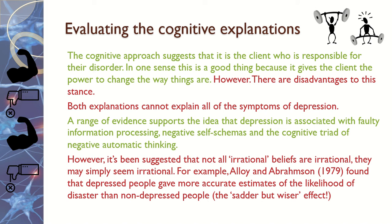Also, both explanations cannot explain all symptoms of depression. Some patients are deeply angry, some can even suffer from hallucinations, and occasionally Cotard syndrome — delusions that they are zombies. This is very unusual but it does occur, and the models cannot explain why some people with depression also suffer from these other symptoms, because it's obviously not just their thoughts. However, there is a range of supporting evidence showing that faulty information processing is present in people with depression and that they do have negative self-schemas, which supports these as accurate explanations of depression.